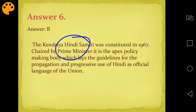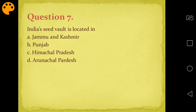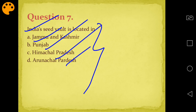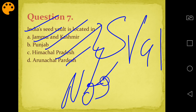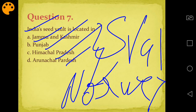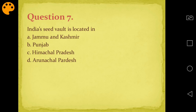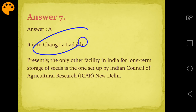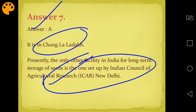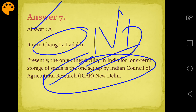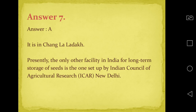Question number seven: India's seed vault is located where? Options are Jammu & Kashmir, Punjab, Himachal Pradesh, or Arunachal Pradesh. You know Svalbard seed vault is in Norway. India's seed vault answer is A - Jammu & Kashmir. It is in Changla region, Ladakh. There is also a seed storage facility at ICAR's Pusa Institute in New Delhi. But the seed vault is in Changla, Ladakh.